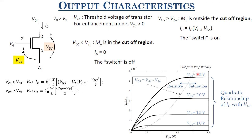For different VGS values, as VGS increases, drain current magnitude increases. First it increases linearly, then saturates. Saturation occurs at VGS − VT. The boundary curve is VGS − VT, which increases with VGS. Before VGS − VT the device is in resistive mode; beyond that it is in saturation acting as a constant current source. KN' = μN·COX = μN·εOX/TOX is the process transconductance parameter; μN is electron mobility. KN = KN'·W/L is the gain factor.